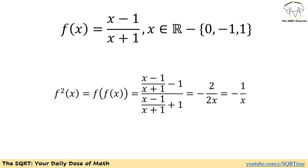To solve this problem I'm going to start with finding f₂(x). f₂(x) is defined as f(f(x)). We have f(x) defined as (x minus 1) over (x plus 1), so to find f(f(x)) I'm going to use f(x) in place of x. After some simplification we will end up with negative 2 over 2x, or minus 1 over x. That's f₂(x).